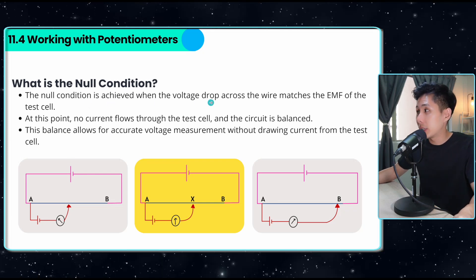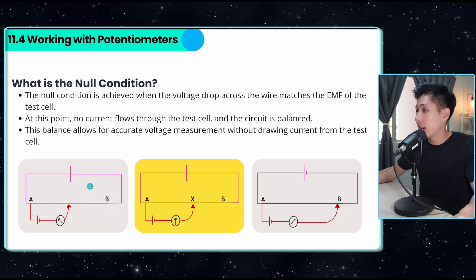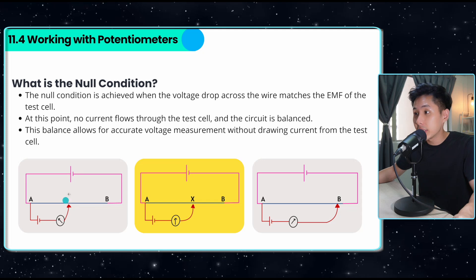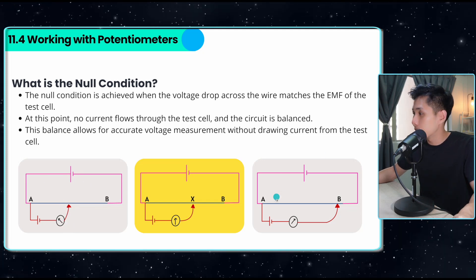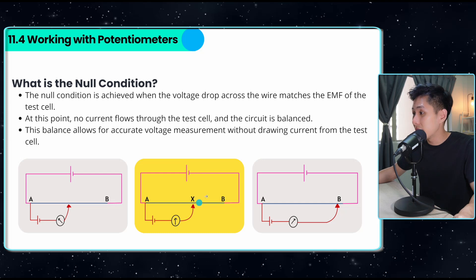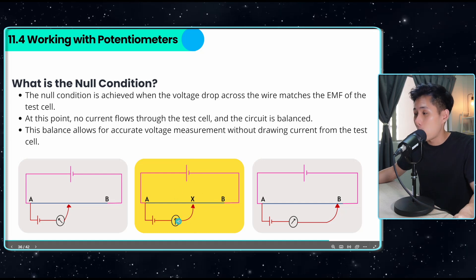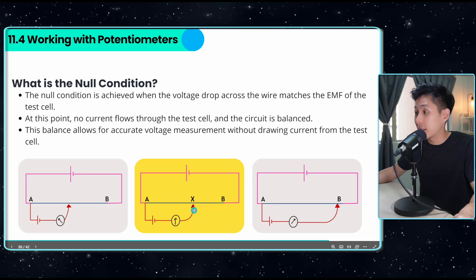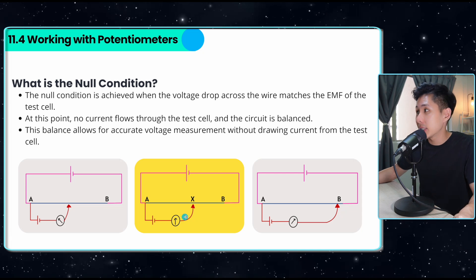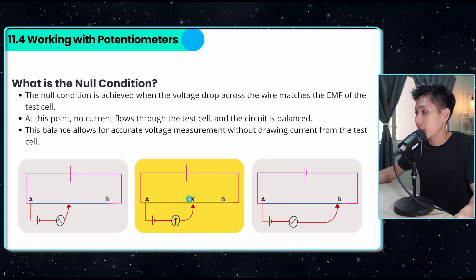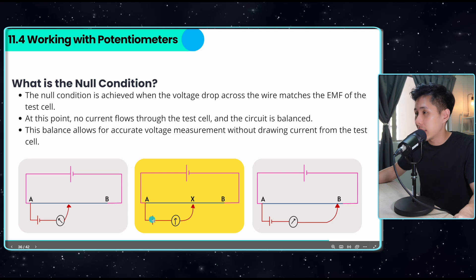It is achieved when the voltage drop across the wire matches the EMF of the test cell. This is not a null condition because the galvanometer is still moving. This is also not a null condition. A null condition would look like this: when I put the jockey at the right spot to a point where the galvanometer is no longer moving. It means the voltage drop across the wire matches the EMF of the test cell.